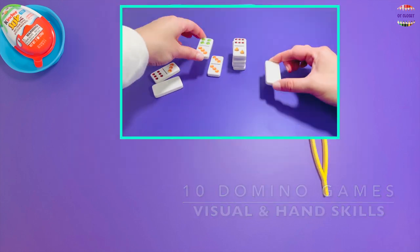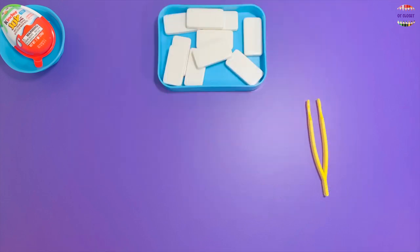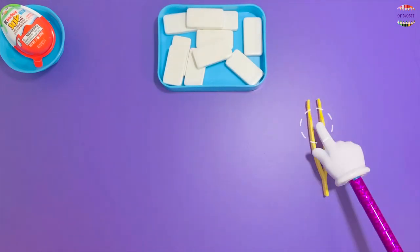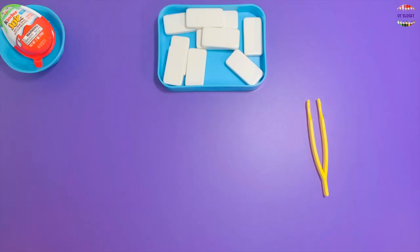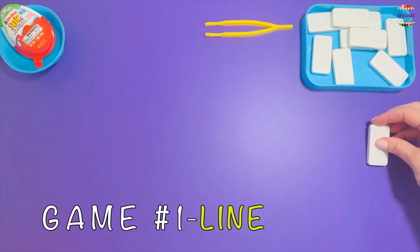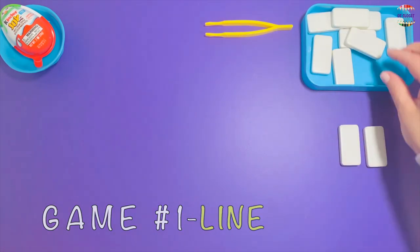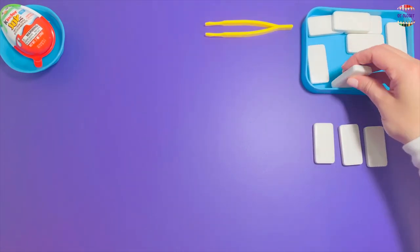For our game you need to get 10 domino pieces, tweezers, kitchen tongs, and when we're done we'll open the Kinder Egg. Game number one: use one hand to pick up one domino at a time and make a straight line.